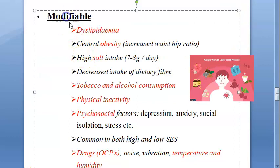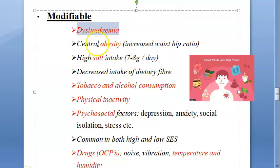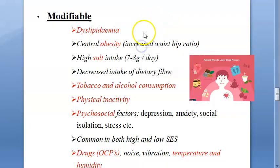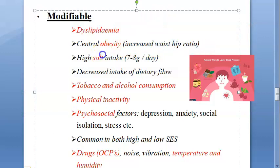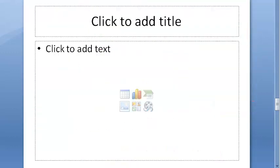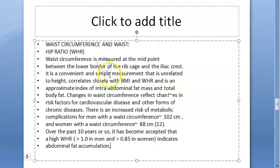Now let us look at the modifiable risk factors — what can this person do to reduce his blood pressure. He can make sure he doesn't have dyslipidemia — cholesterol control. Regarding obesity, he has to maintain a proper waist-hip ratio. Let us understand what waist-hip ratio is.